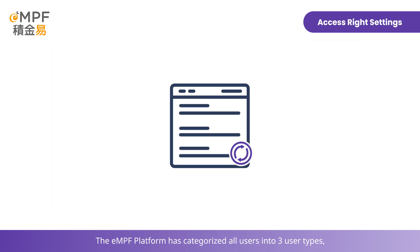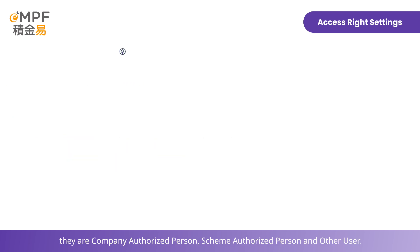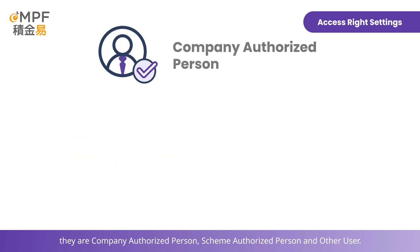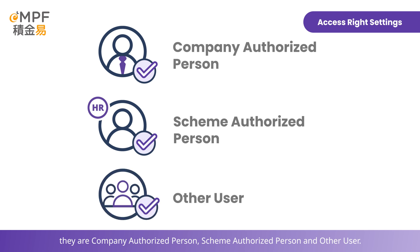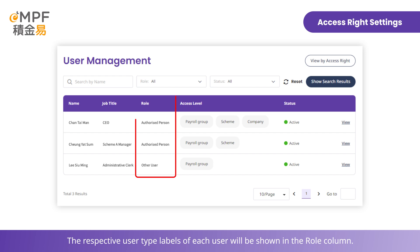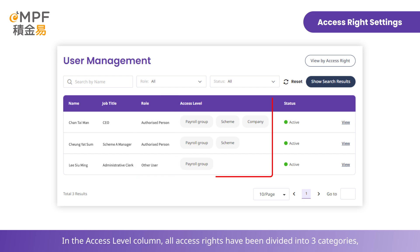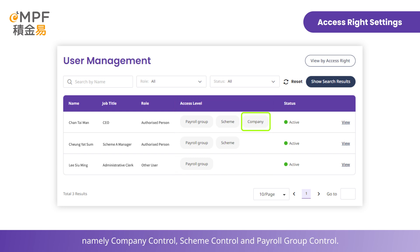The EMPF platform has categorized all users into three user types: company authorized person, scheme authorized person, and other user. The respective user type labels of each user will be shown in the Role column. In the Access Level column, all access rights have been divided into three categories: company control, scheme control, and payroll group control.